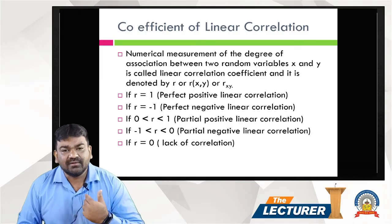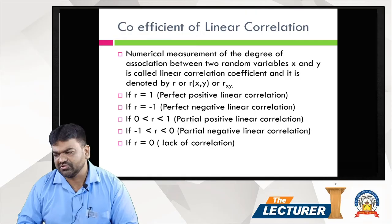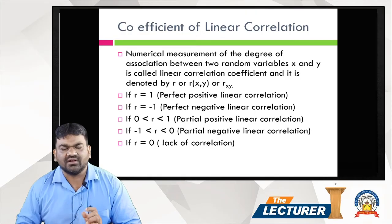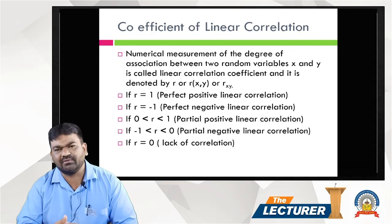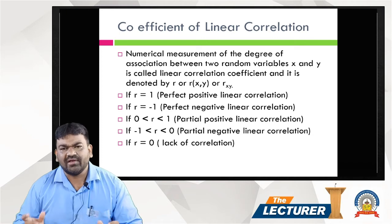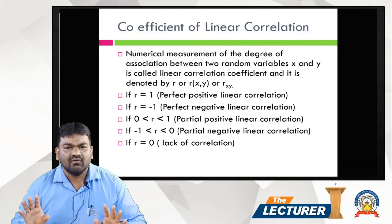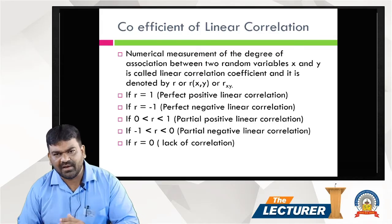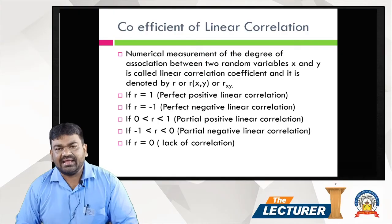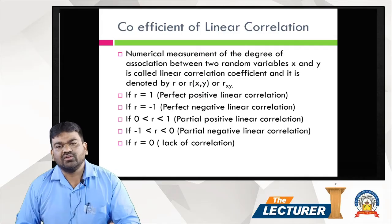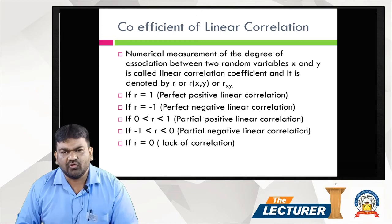The interpretation of r: r means the coefficient of correlation. If r equals plus 1, that means perfect positive correlation. If r equals minus 1, that means perfect negative correlation. If r equals zero, that means lack of correlation. Between zero and minus 1 is partial negative correlation, and between zero and plus 1 is partial positive linear correlation. These are the types of correlation.